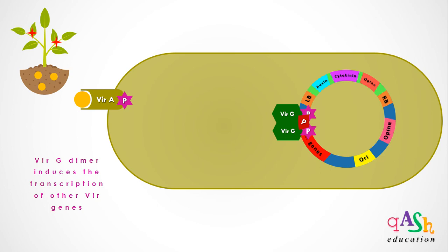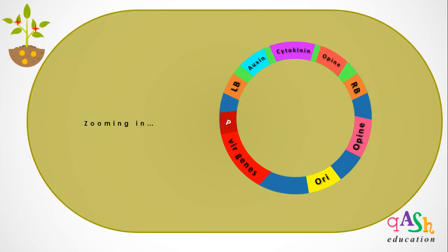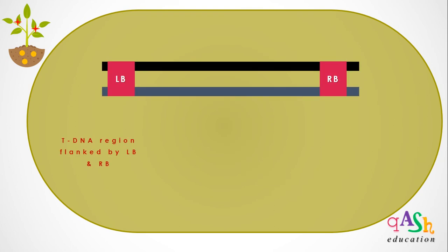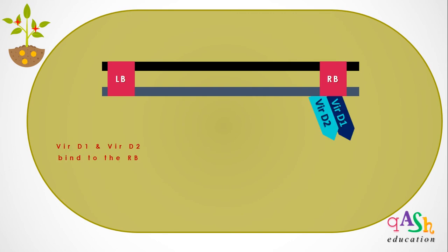Let's zoom in to see what happens at the T-DNA region. This is a representation of the T-DNA of our Ti plasmid, and it is flanked by the left border and right border inverted repeat sequences. Two of the vir proteins, VirD1 and VirD2, bind at the right border.